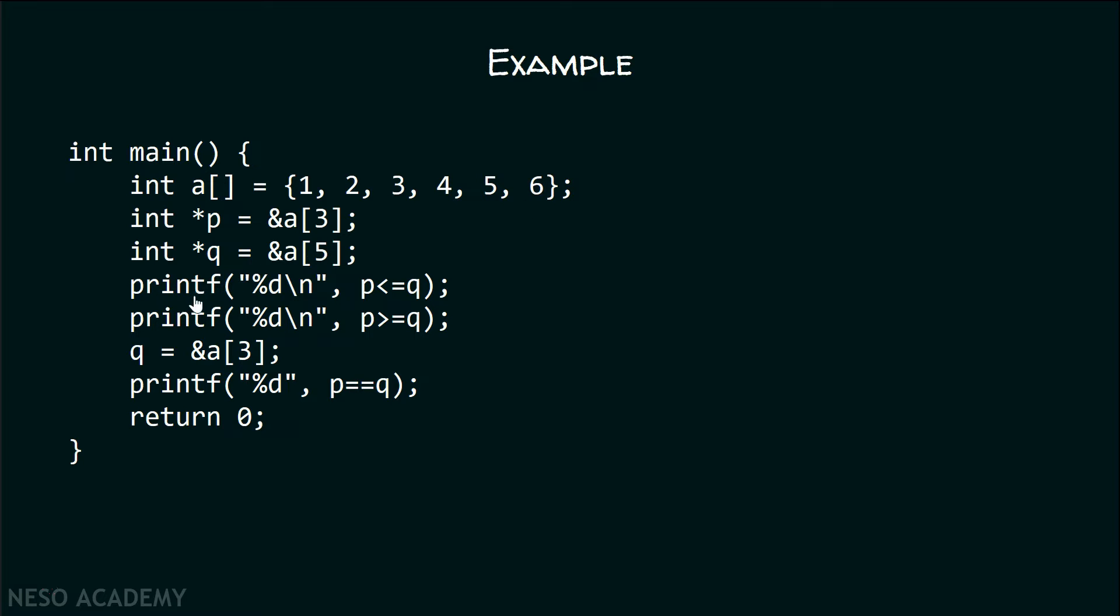With the help of printf function, I want to print the output of P less than or equal to Q. We can see the current position of P and the current position of Q. The output depends upon the relative positions of both the pointers, and we can see that pointer P is before pointer Q.